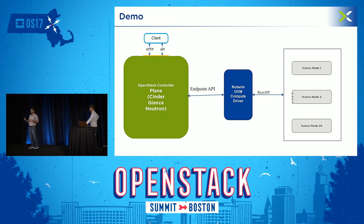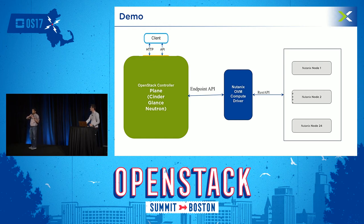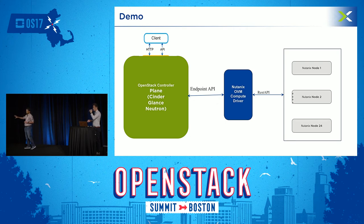We leverage the Nutanix distributed file system to access the Glance and Cinder repositories. The cluster has a highly available virtual IP so that your control plane remains untouched during upgrades. If VMs migrate from one hypervisor to another, it is seamless to the control plane. The VMs are highly available and you can query the state of VMs and nodes — everything is highly available from OpenStack's perspective.